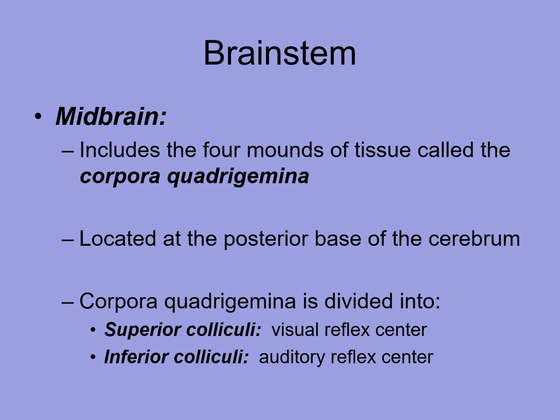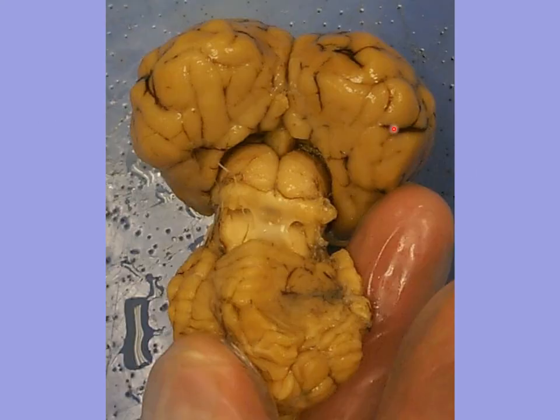The brain stem is divided into different components. First, the midbrain. It has four mounds of tissue called the corpora quadrigemina, located at the posterior base of the cerebrum. It is divided into the superior and inferior colliculi, and this is where you will find some of your auditory reflex centers and visual reflex centers.